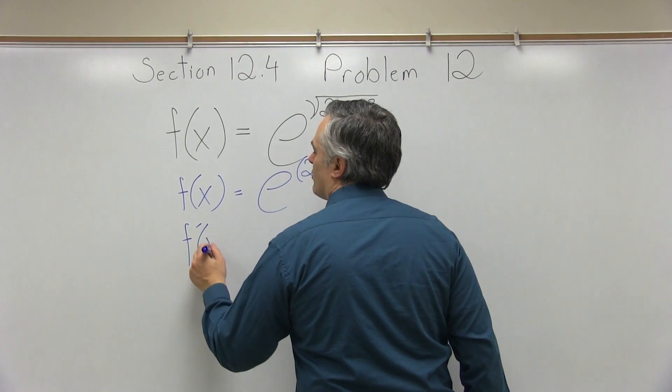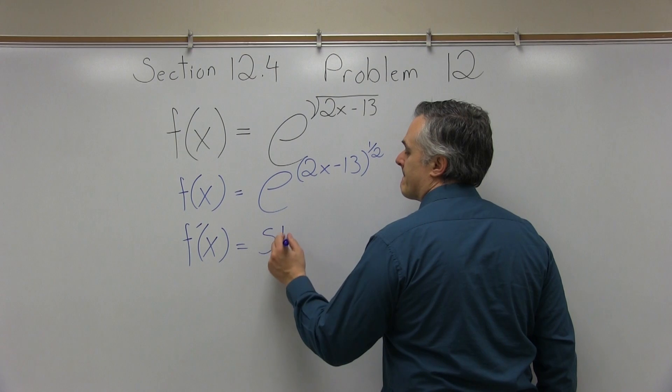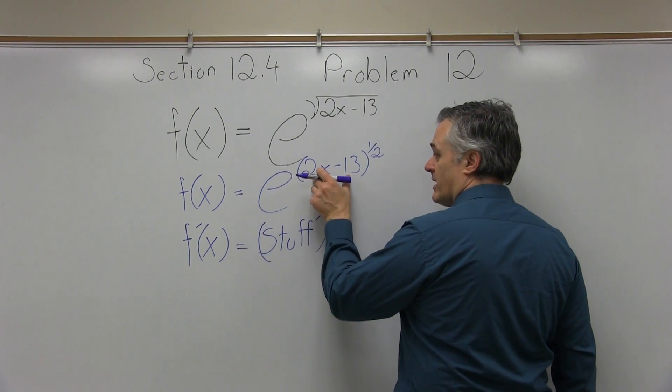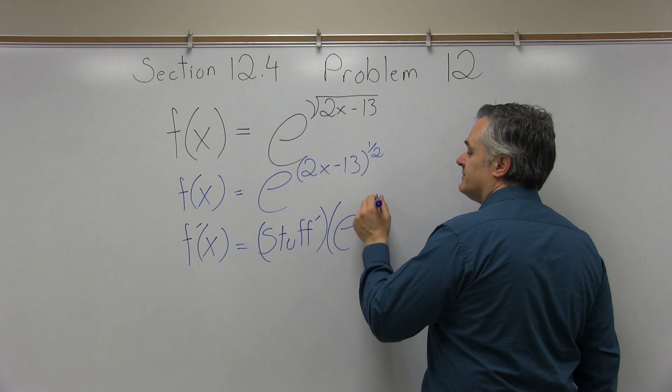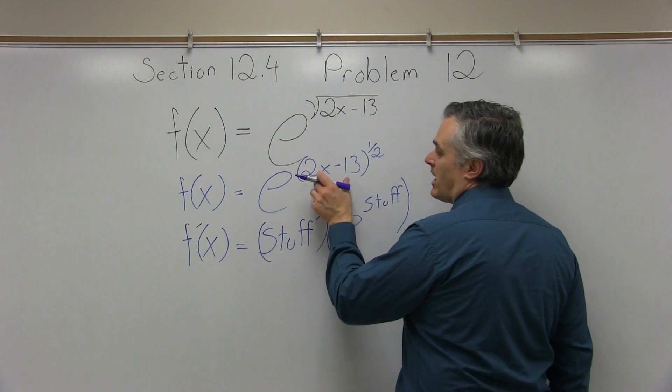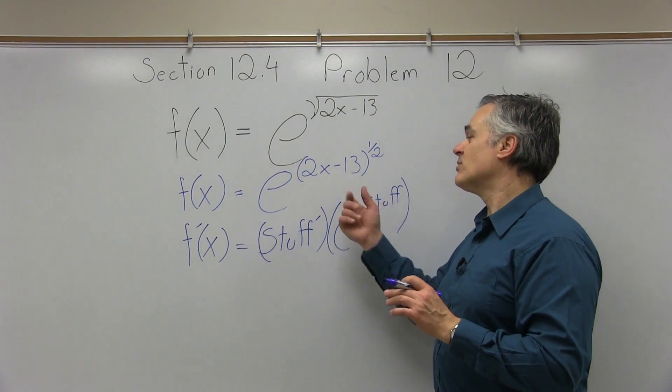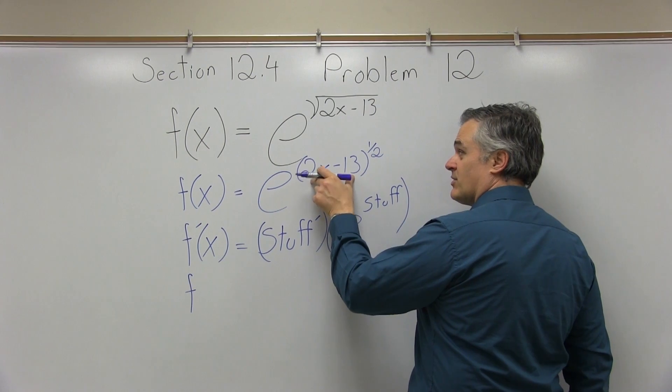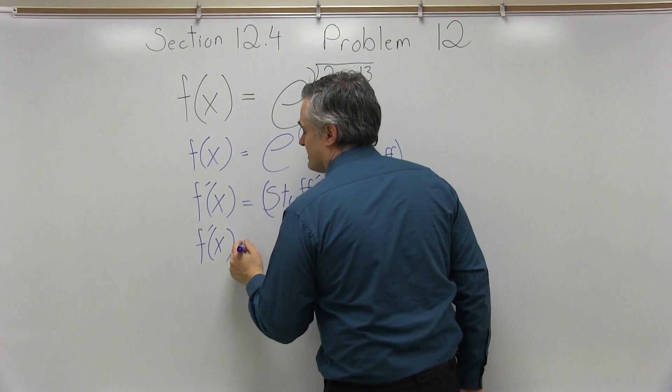So, f prime of x equals, we're going to have stuff prime, where the stuff is the 2x minus 13 in parentheses to the 1 half power, times e to some stuff. Now, in terms of the stuff prime, I'm going to need to apply the chain rule. So the chain rule was for stuff in parentheses to a power, which is what I have here. I have 2x minus 13 in parentheses to a power, which is 1 half.